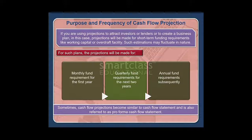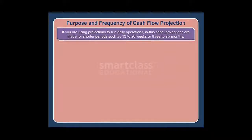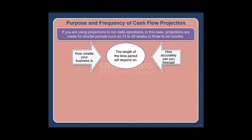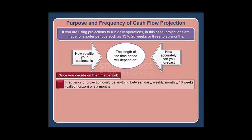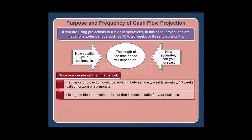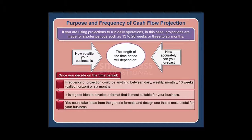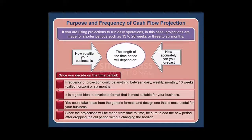Sometimes cash flow projections become similar to a cash flow statement and are also referred to as a pro forma cash flow statement. If you are using projections to run daily operations, projections are made for shorter periods such as 13 to 26 weeks or 3 to 6 months. The length of the time period depends on how volatile your business is and how accurately you can forecast. Frequency of projection could be daily, weekly, monthly, 13 weeks (called the horizon), or six months. Design a format most suitable for your business, and be sure to add the new period after dropping the old period without changing the horizon.